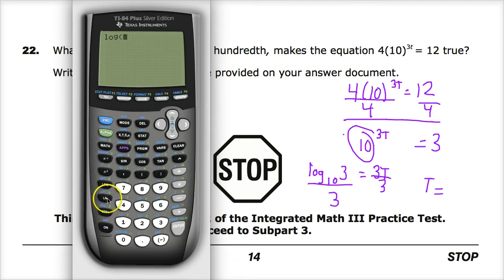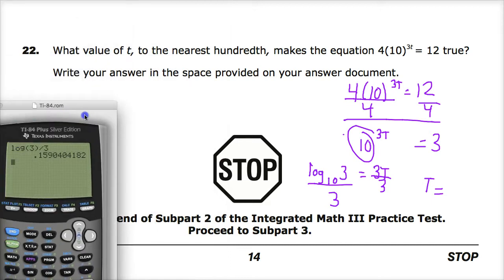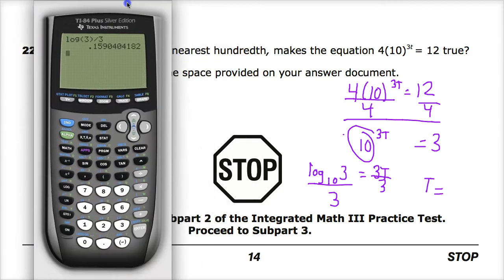So I just put the 3 here and set that up, and then divide that by 3, hit enter, and get 0.159. And they want me to round to the nearest hundredth.